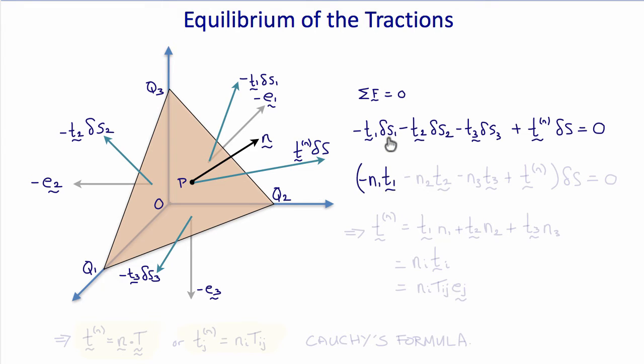And then knowing that delta s1 is n1 delta s, delta s2 is n2 delta s, delta s3 is n3 delta s, we get minus n1 T1 minus n2 T2 minus n3 T3 plus Tn times delta s equals zero, which means that Tn must equal T1 times n1 plus T2 times n2 plus T3 times n3.